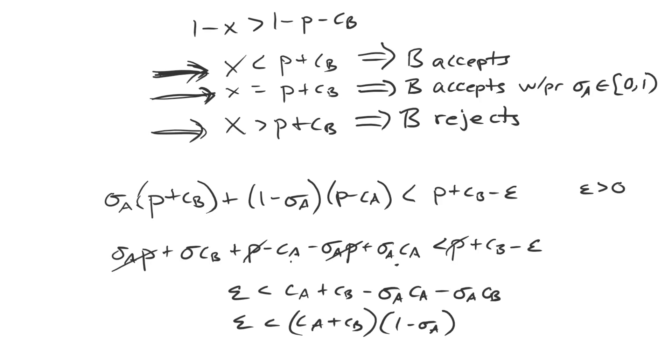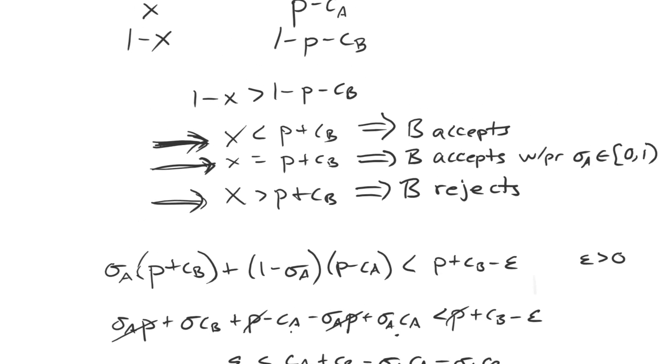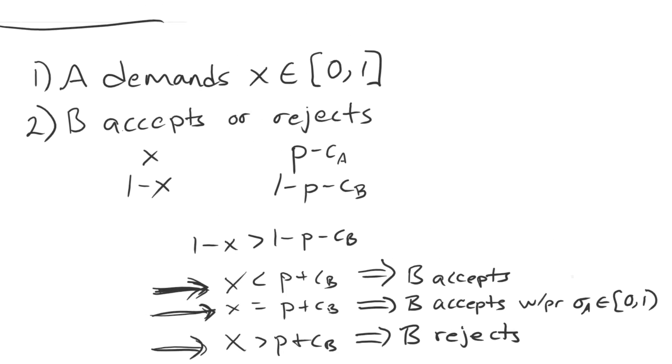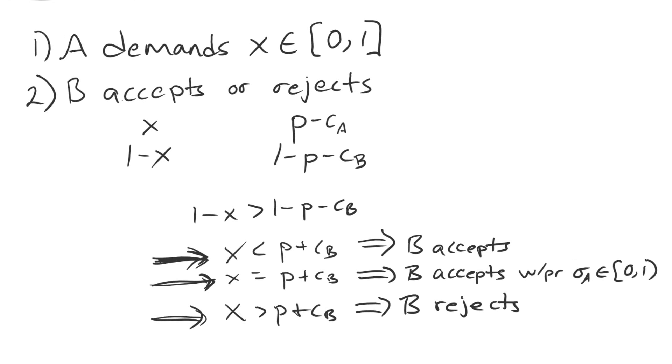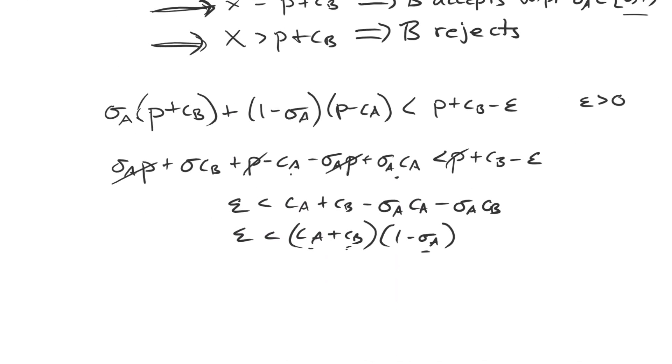If you look at that, you'll see that the right-hand side is a positive amount. Why is that? CA and CB are both positive amounts, and 1 minus sigma A, remember that sigma A goes up into 1, but not actually reaching 1. So that means that it's a number less than 1. So when you take 1 minus that number, that's some positive value. And so we have a positive value over here, which means we can always find an epsilon value that is going to satisfy this.